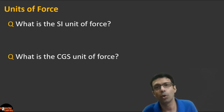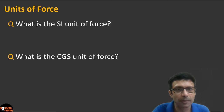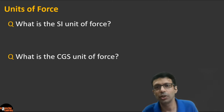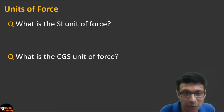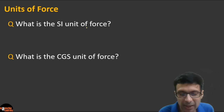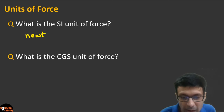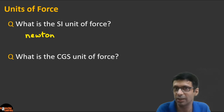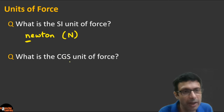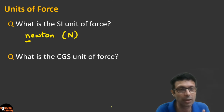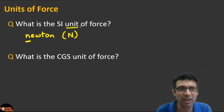The SI unit of force is the newton — written with a small 'n' in full and a capital 'N' as an abbreviation. Be careful: many students write it with a capital 'N' in full — that's wrong. We are writing the unit, not the scientist's name, so it must be a small 'n'.